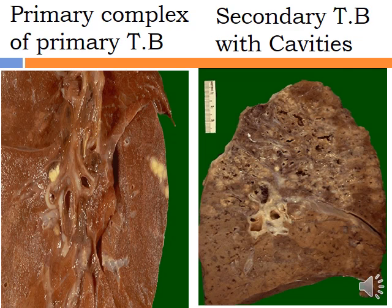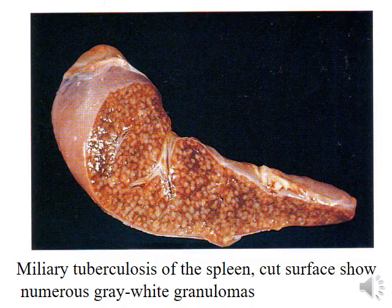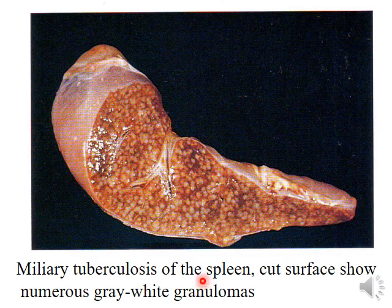This picture represents the primary complex — the Ghon complex. We see yellowish-white small nodules under the pleura, in combination with enlarged lymph nodes showing caseous necrosis. This combination is called the Ghon complex and represents primary tuberculosis. In secondary tuberculosis, we see the upper part of the lungs affected with yellow pale areas representing consolidation, formation of multiple cavities, and wide areas of granuloma. This example also shows the spleen affected by multiple small nodules resembling millet seeds — an example of miliary tuberculosis.